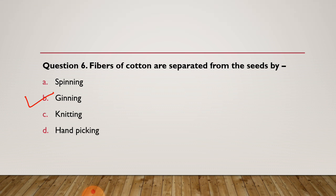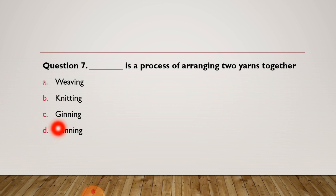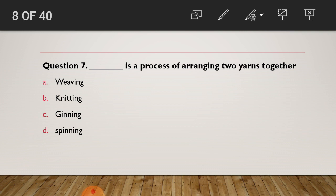Now moving to question 7: Dash is a process of arranging two yarns together. Options: a) weaving, b) knitting, c) ginning, d) spinning. By which process can we arrange two yarns together? Have you chosen your option? The right answer of question 7 is weaving. Weaving is the process of arranging two yarns together.